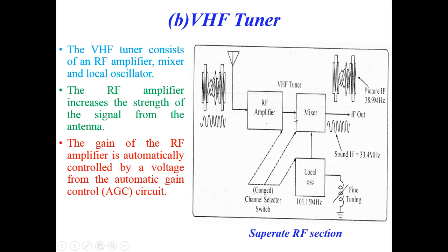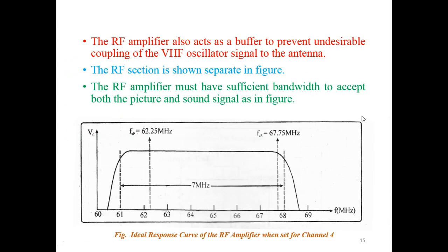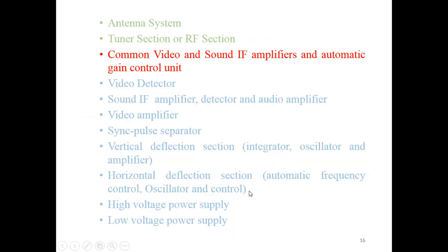The signal is mixed with the RF amplifier. The signal coming in is processed through the channel selector which routes it toward the UHF or VHF path, and here we get the IF output. The RF amplifier also acts as a buffer to prevent undesirable coupling of the VHF oscillator signal to the antenna. The RF amplifier must have sufficient bandwidth to accept both the picture and sound signals. The complete bandwidth ranges from 60.5 to 68 MHz, with the lower frequency at 62.25 MHz and the higher frequency at 67.75 MHz, giving a total bandwidth of 7 MHz.